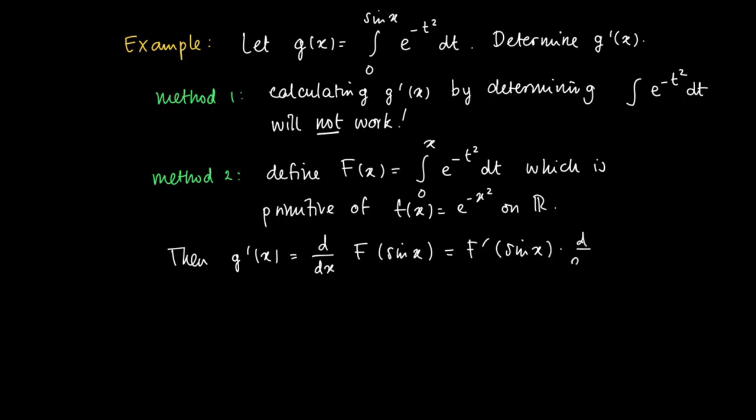So we get F prime of sine of x times the derivative of the sine, which is the cosine. So here we get e to the power minus sine squared x times the cosine of x. And of course, the derivative sine should not be used over here.